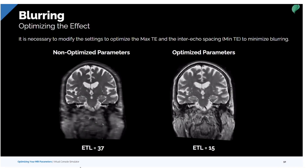An example with an echo train of 37 shows the blurring artifact clearly — that's non-optimized. With a more standard ETL, the blurring artifact has decreased quite a bit.